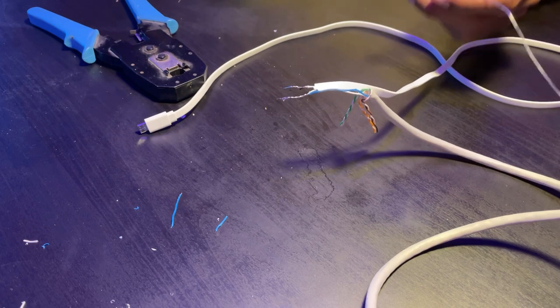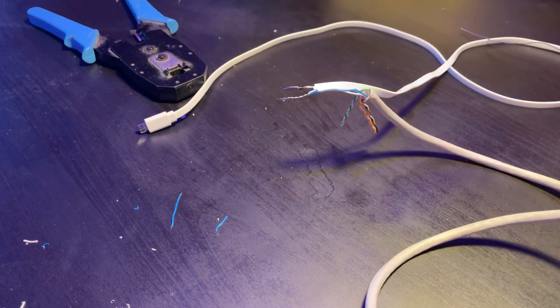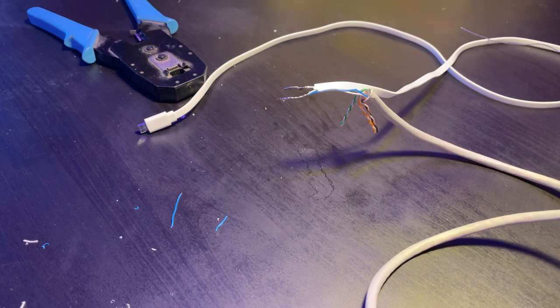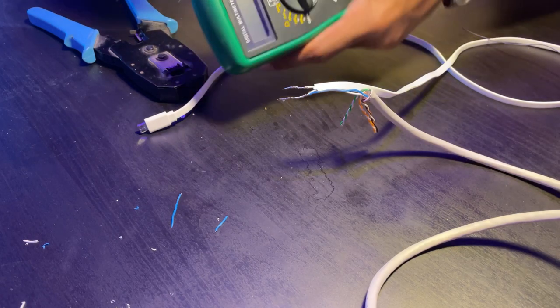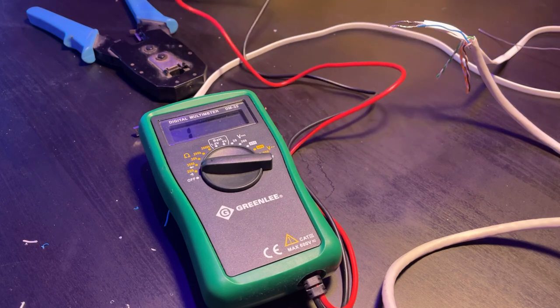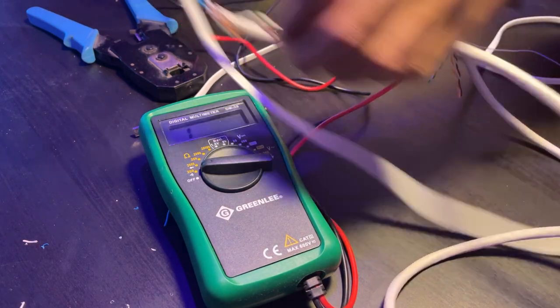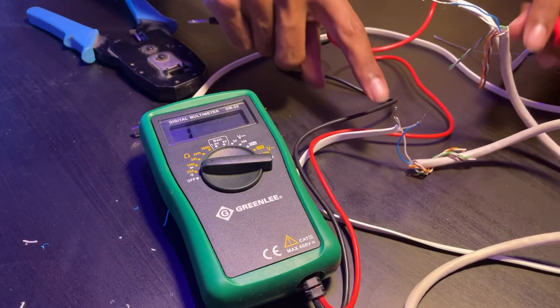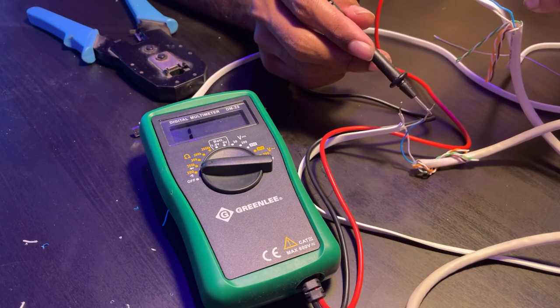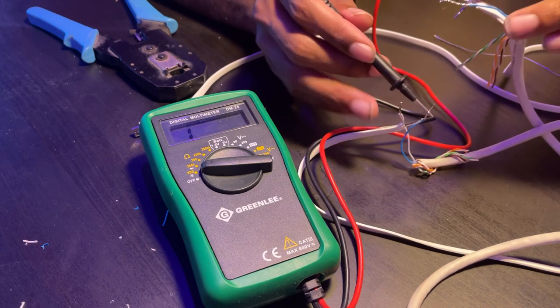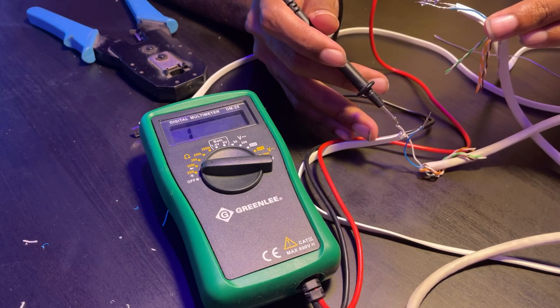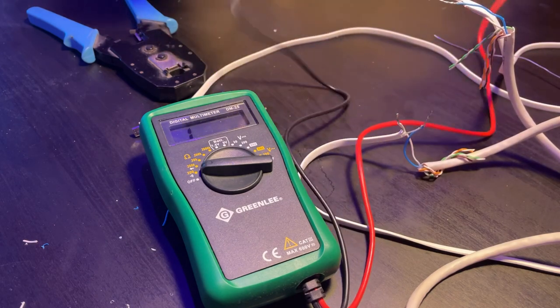So wow, that was very simple. So it's done. Right now I'm going to just test the continuity. Continuity, continuity, meaning if there's a clear flow of signal from one end of the cable to another. If we're going to call it in simple English. So this is a multimeter. Let's see if it's going to beep a sound from both the ends, then it's perfect.